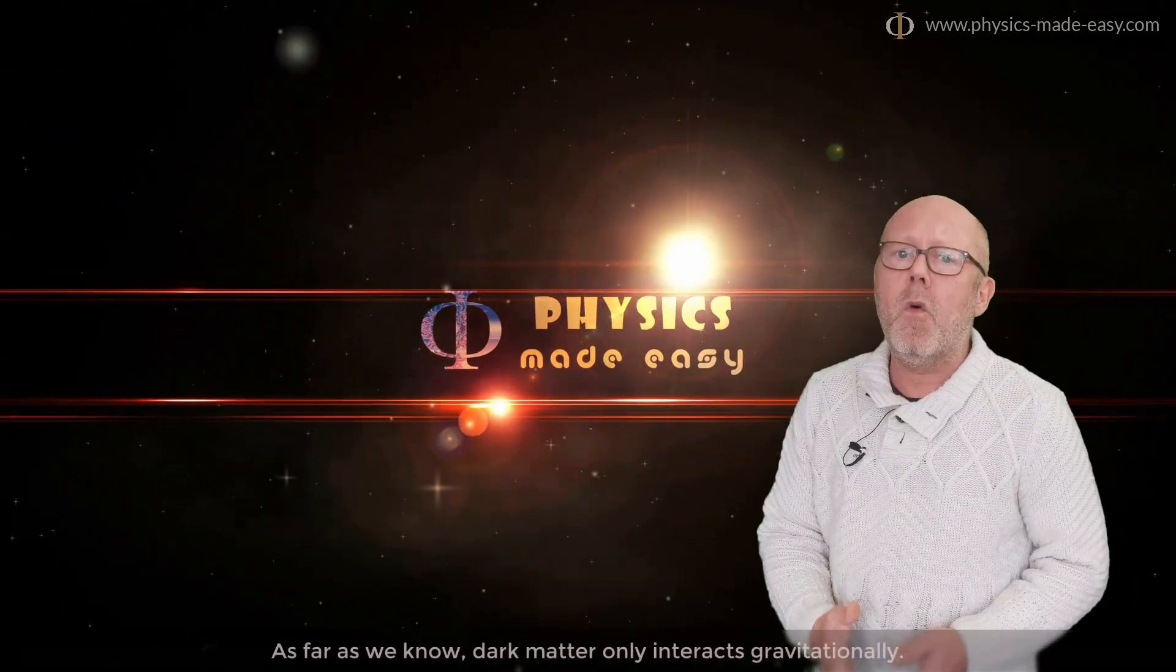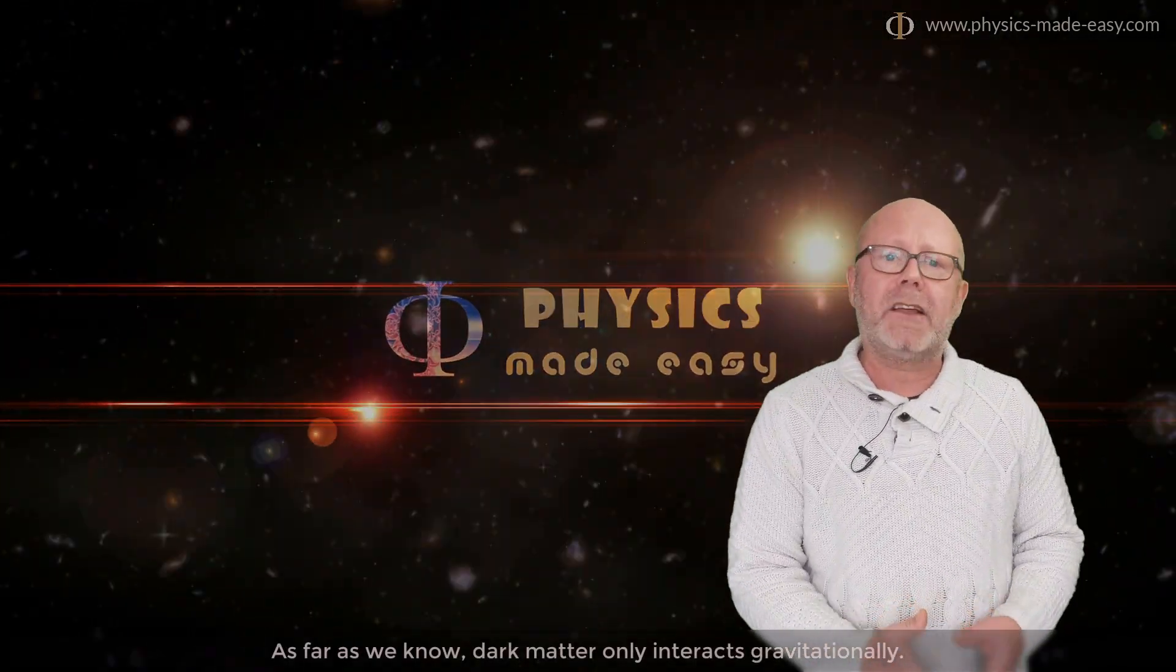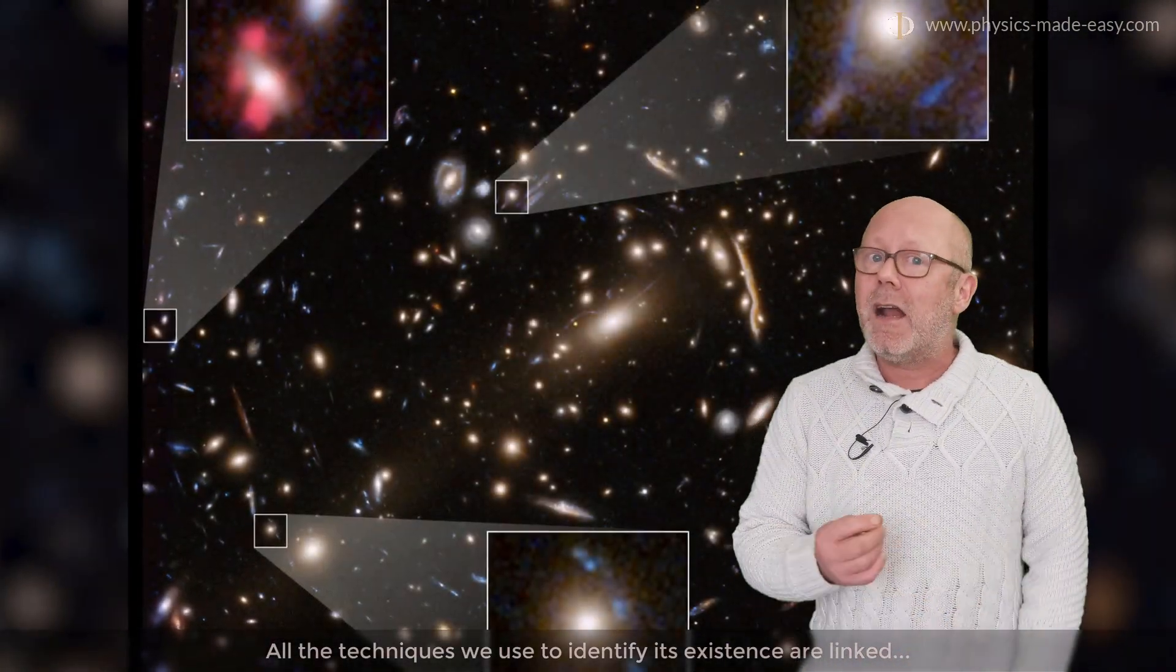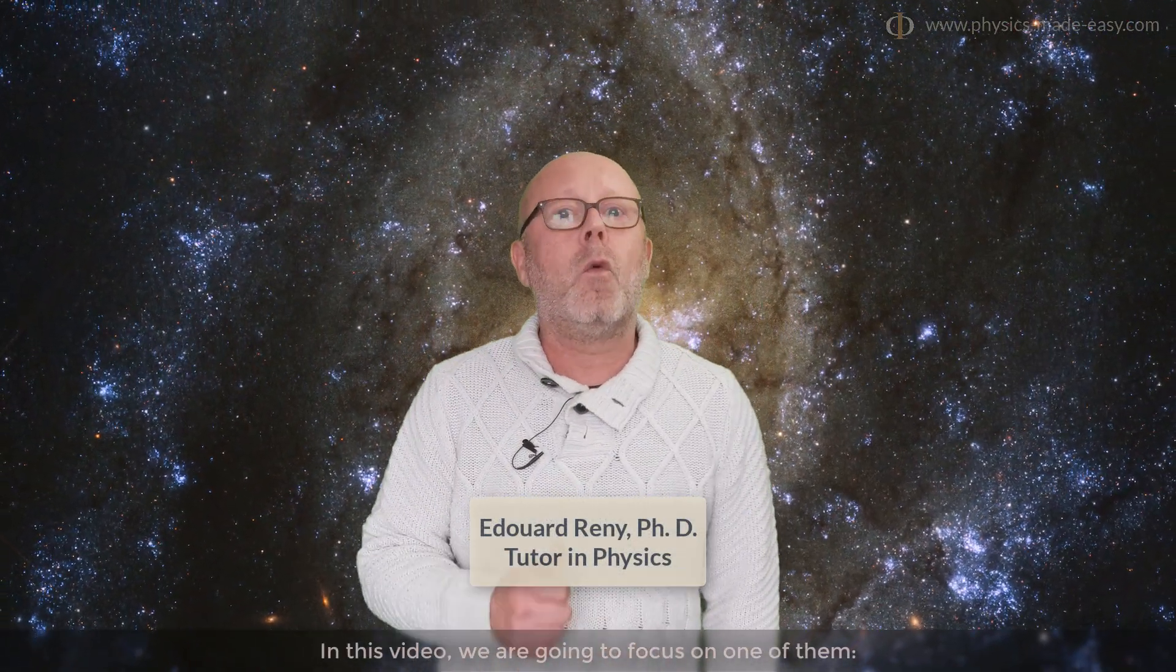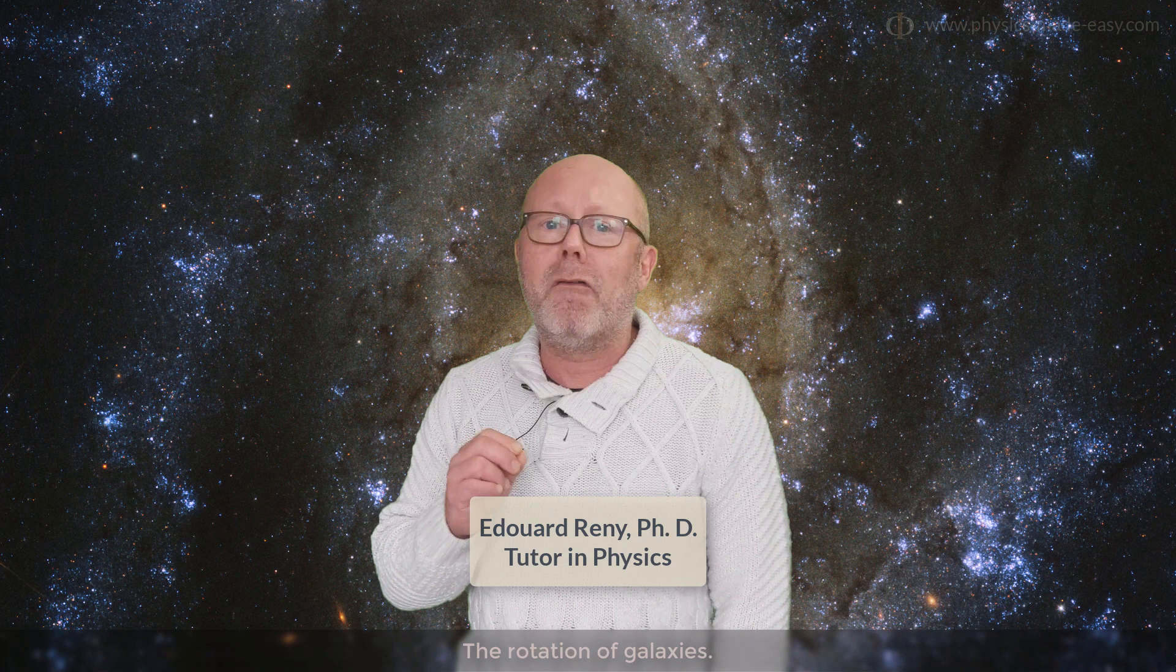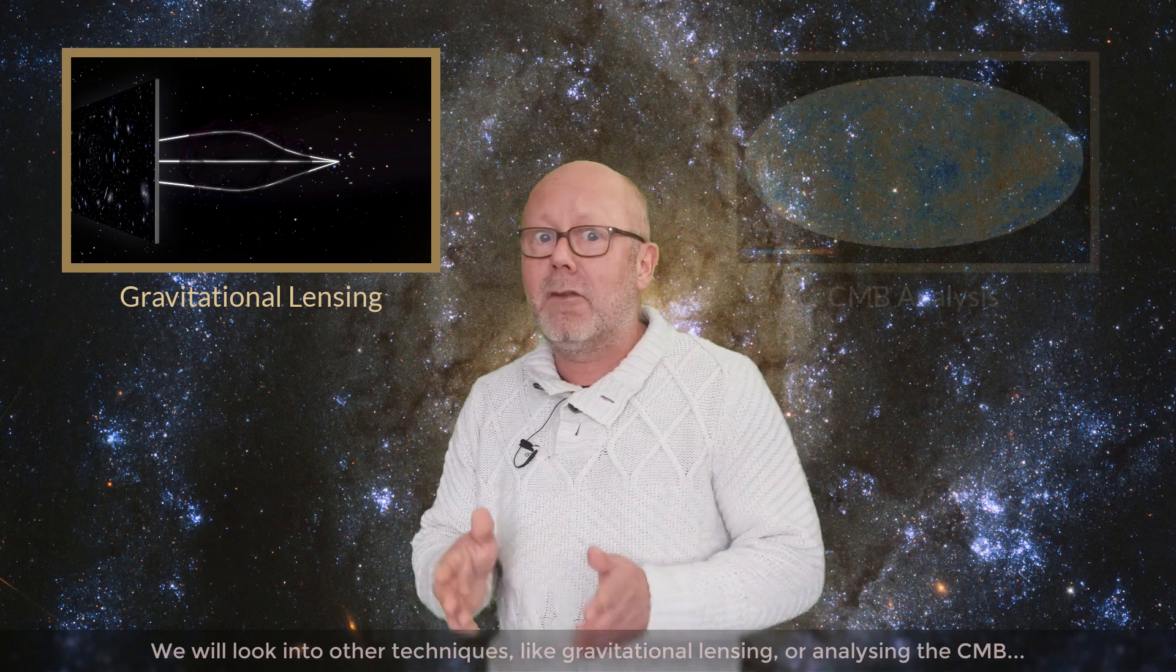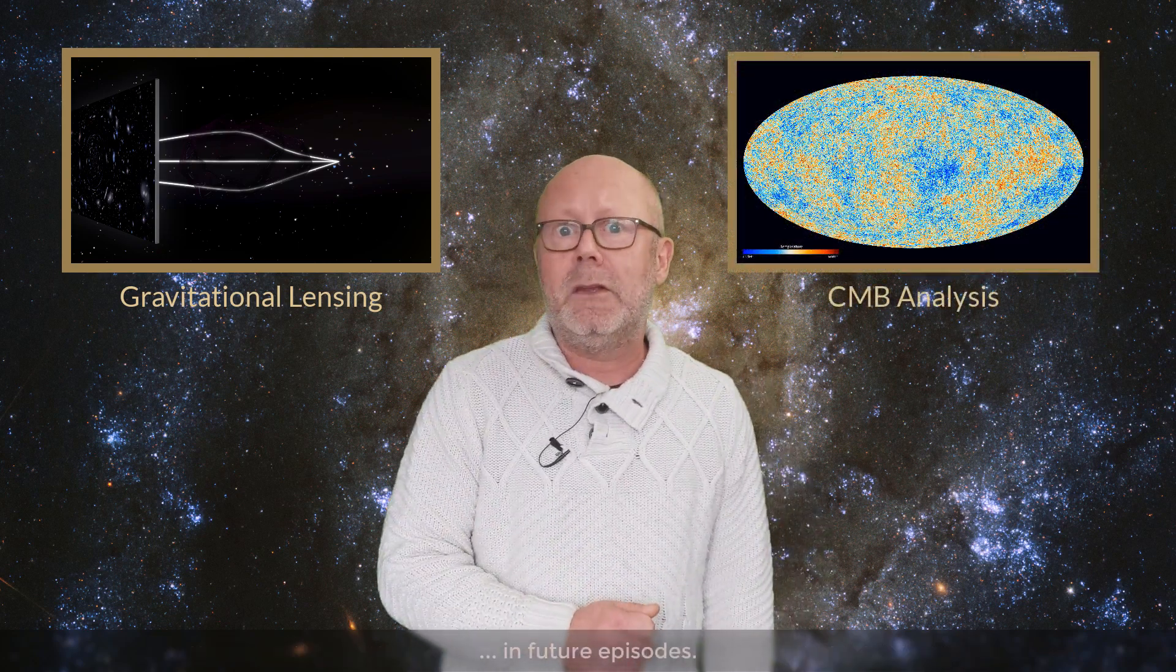As far as we know, dark matter only interacts gravitationally. So all the techniques we use to identify its existence are linked to observing its effects. In this video, we are going to focus on one of them, the rotation of galaxies. We will look into the other techniques like gravitational lensing, or analyzing the CMB, in future episodes.